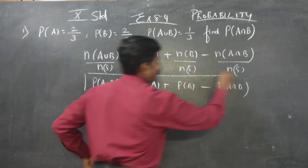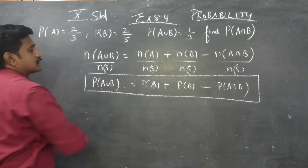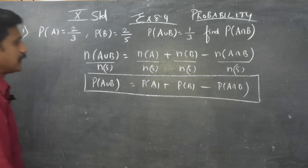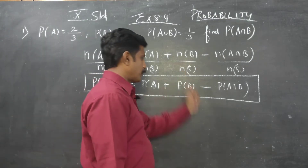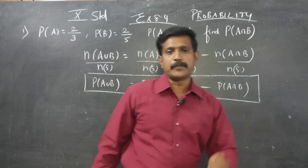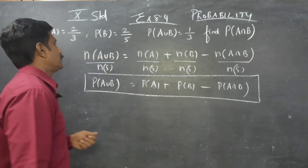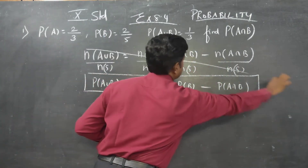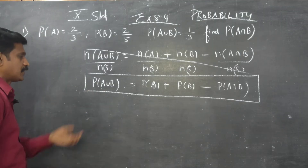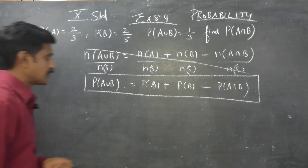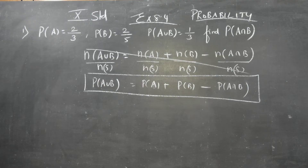This is a new formula I am going to introduce in 10th standard. We are going to learn: probability of A union B is equal to probability of A plus probability of B minus probability of A intersection B. This formula comes from the set theory formula we used in 9th standard.